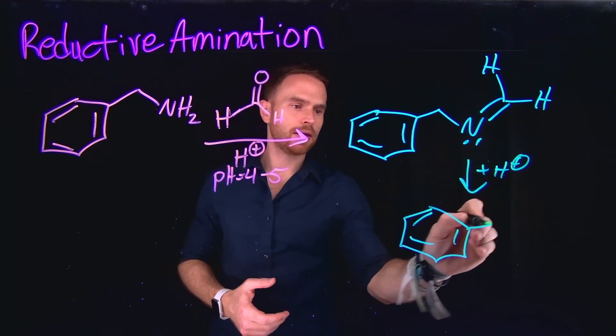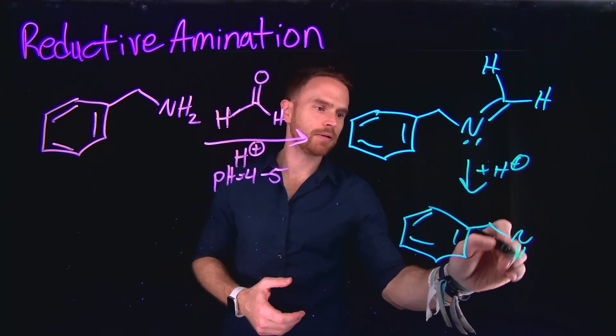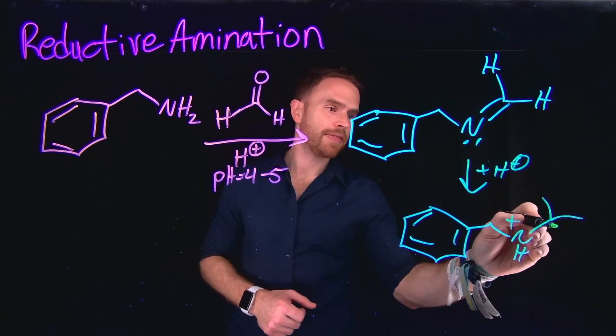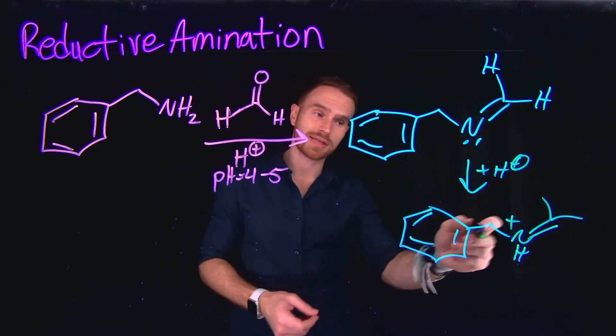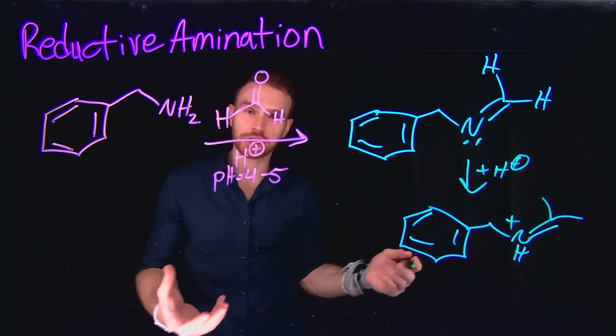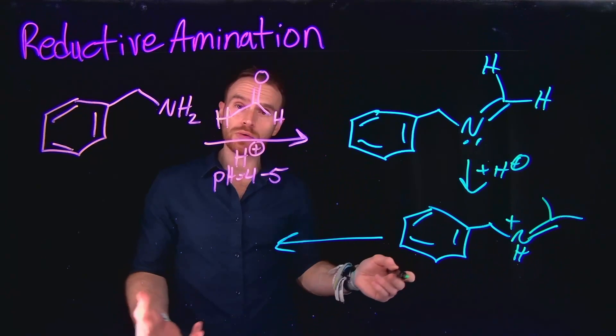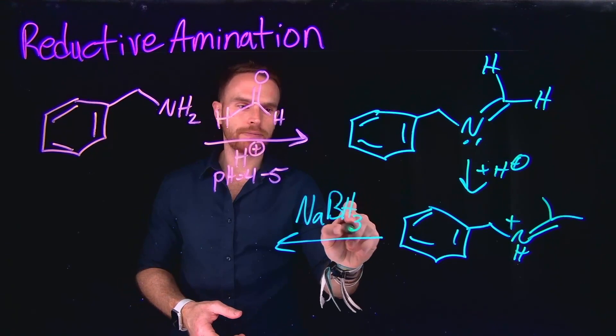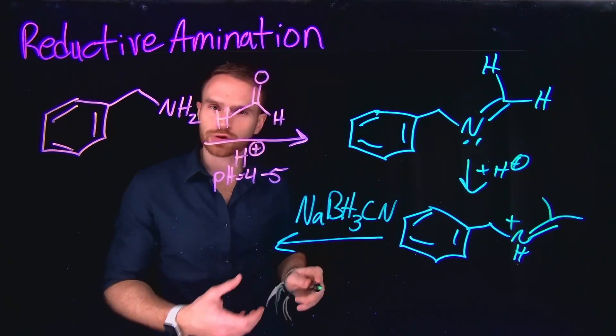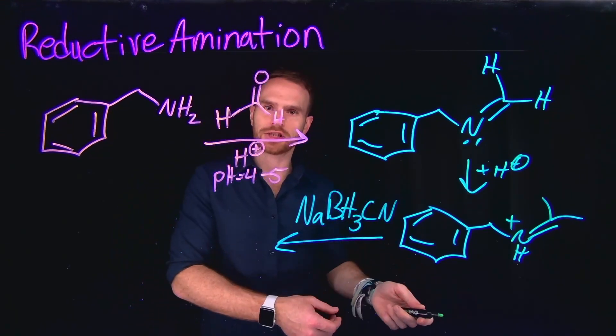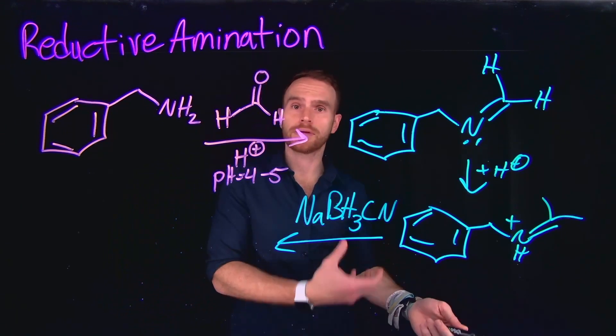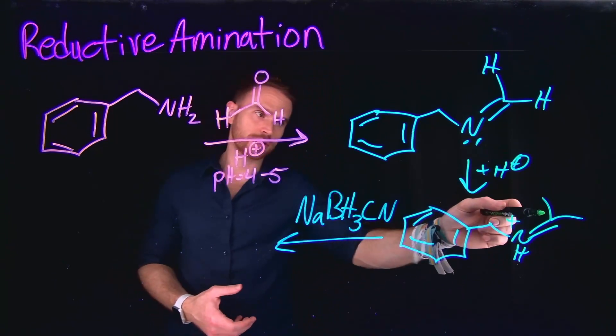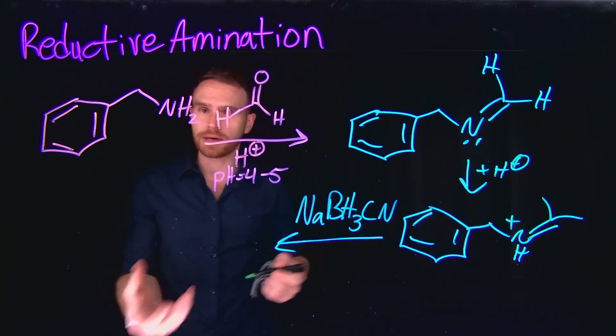So we can generate the iminium ion, which now places a positive charge on nitrogen. And then from there, what we can do is reduce this iminium ion to generate our amine. And we do this by using a compound called sodium cyanoborohydride. And sodium cyanoborohydride is a slightly weaker reducing agent than something like just straight up sodium borohydride. And this will reduce this imine functional group, which is practically like a carbonyl substituent.